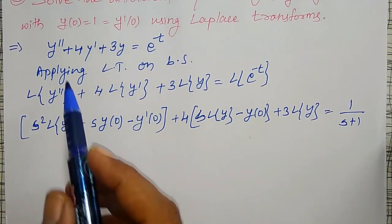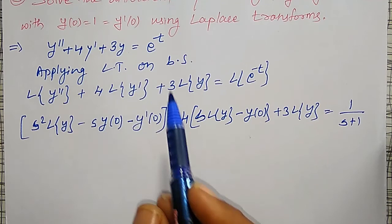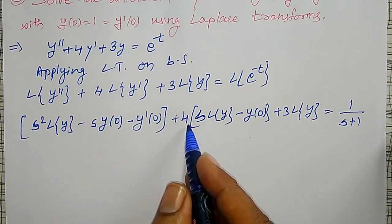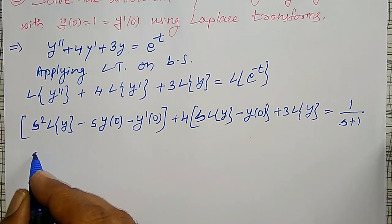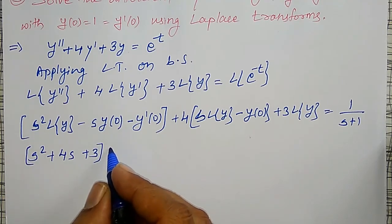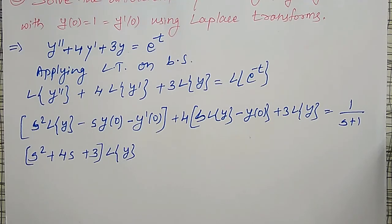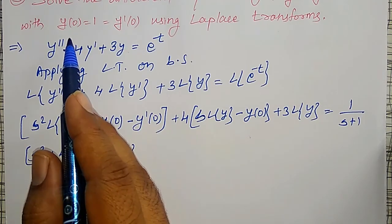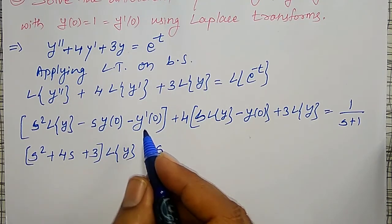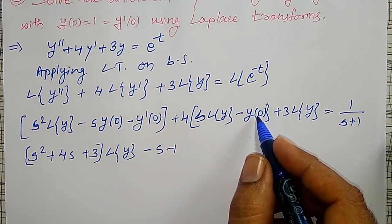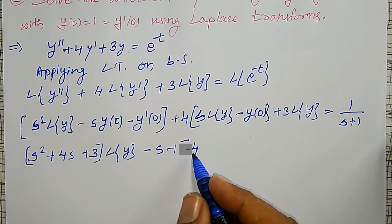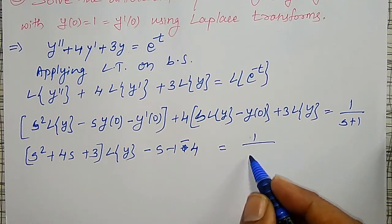Now, substitute the initial conditions: y(0) equal to 1, y dash(0) also equal to 1. Simplifying and taking the Laplace Transform of y terms together, I get: s squared plus 4s plus 3, into Laplace Transform of y. In the remaining terms, substituting y(0) equal to 1 and y dash(0) equal to 1, I get minus s, minus 1, and minus 4. On the right-hand side it is 1 divided by s plus 1.